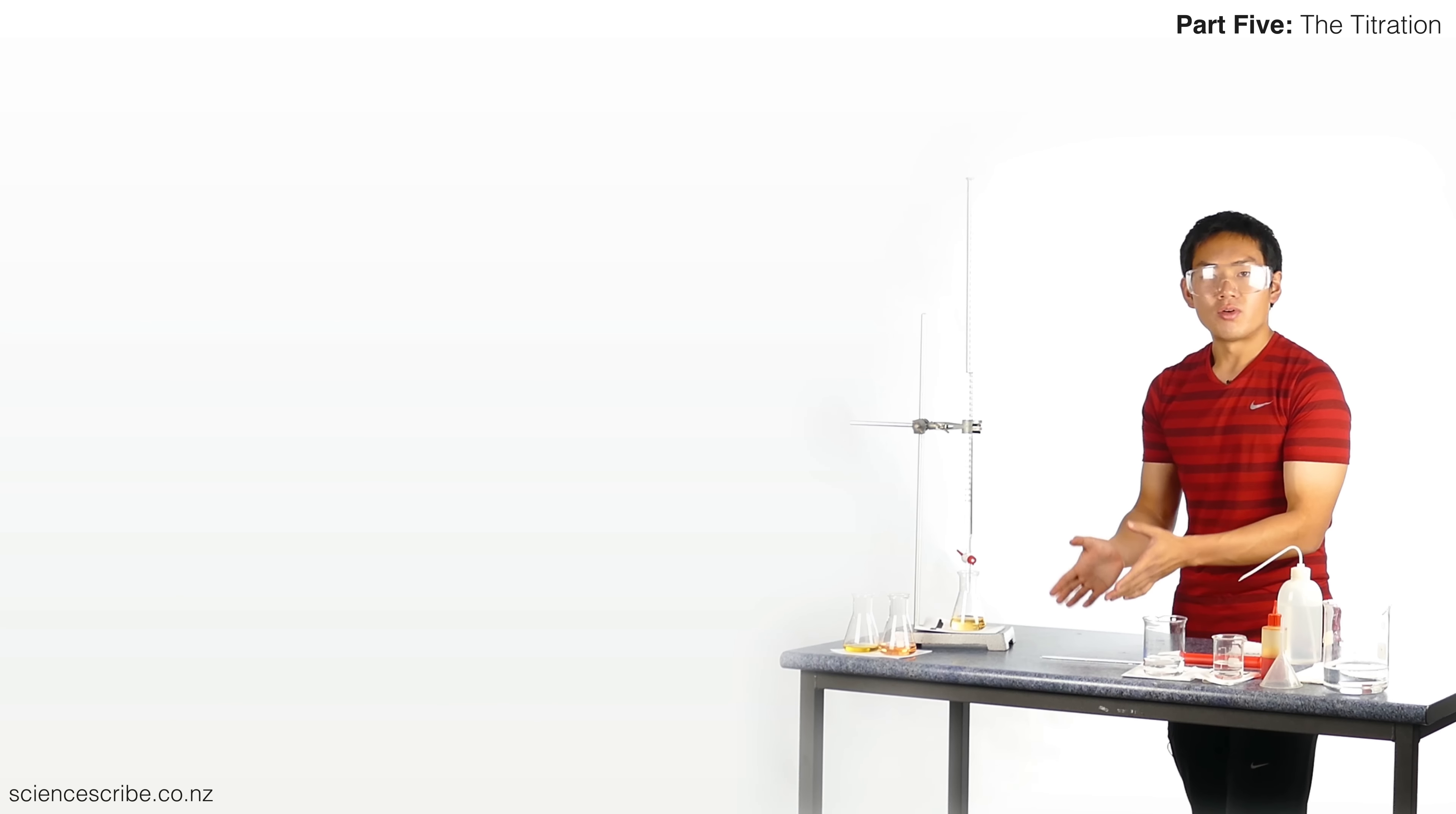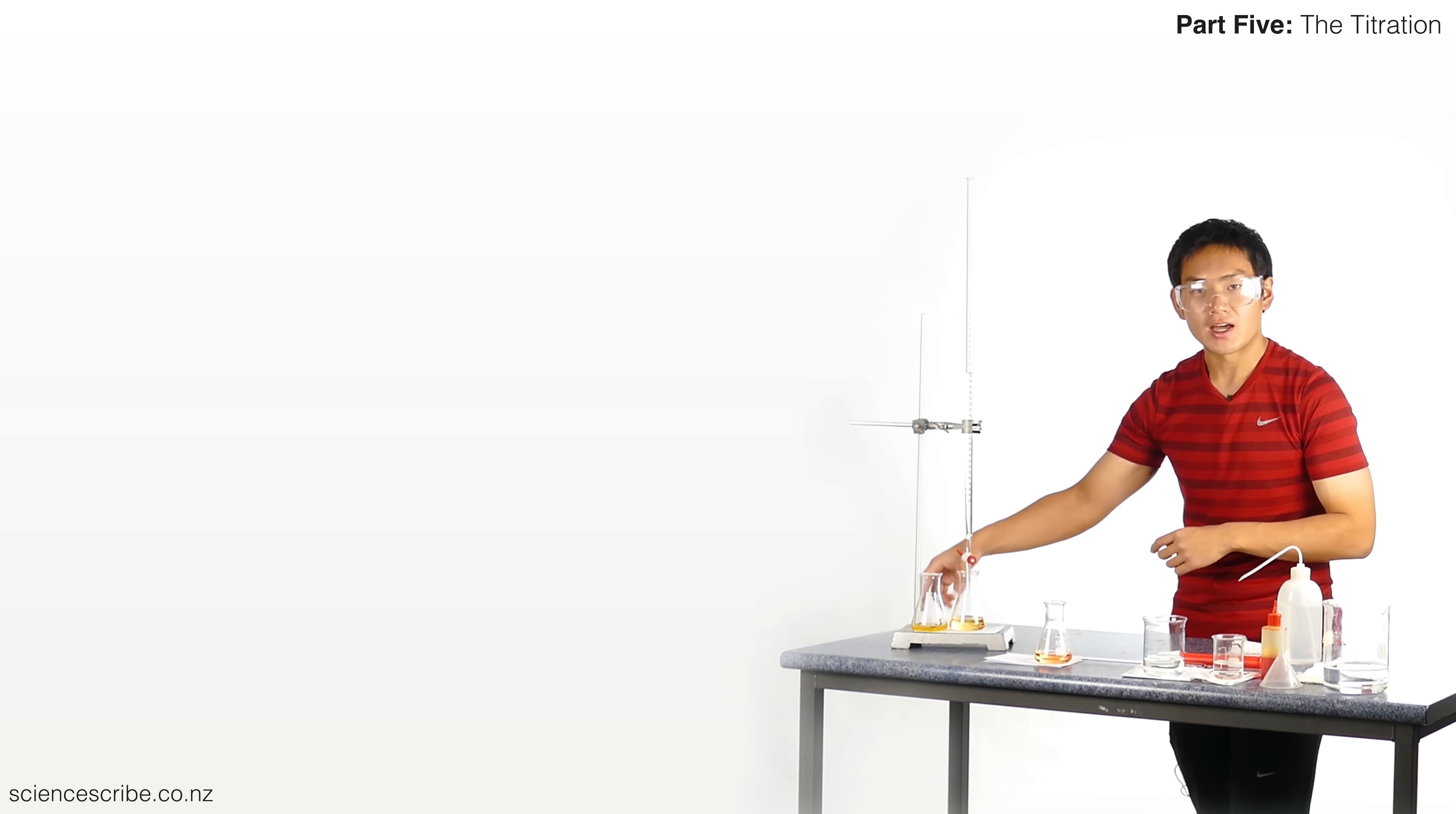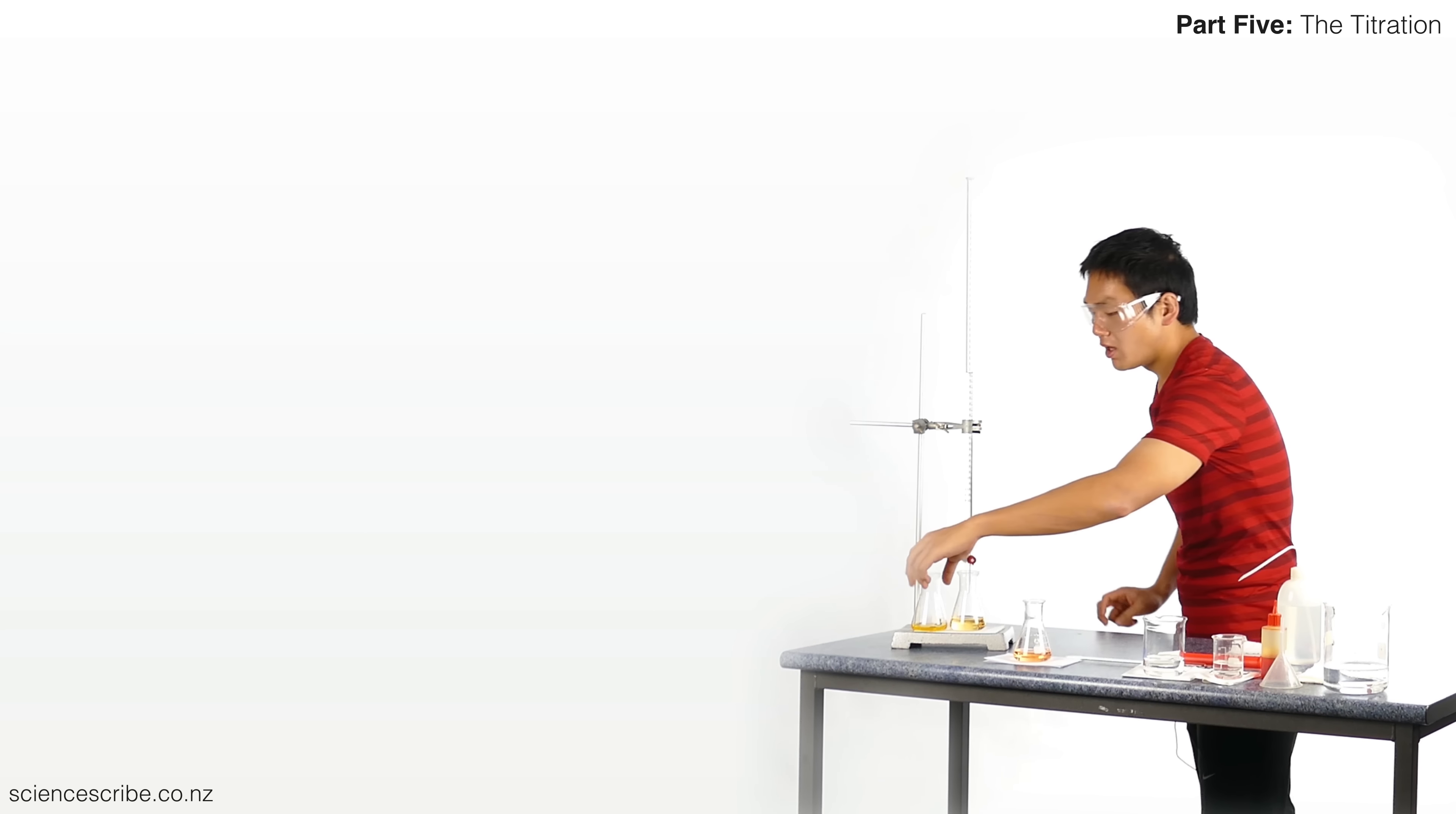That is our endpoint, and I know it's my endpoint because I've got these two flasks to compare it to. I've got my original yellow—that's what it would look like, that's the shade it should be if I hadn't finished. This is the shade for my rough titration. That's the shade it turns to when I get a little too much onto the pink side.